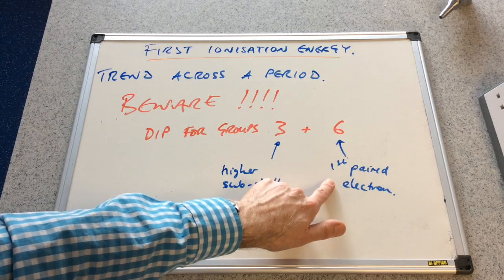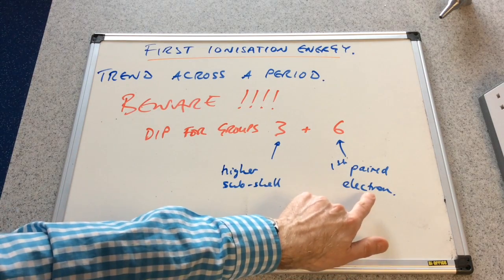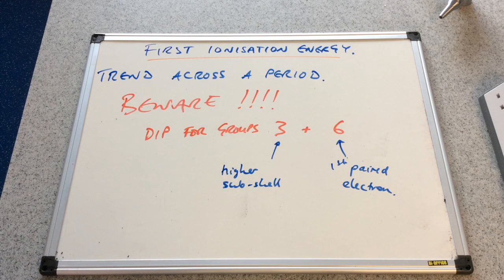And the group 6 reason was that it was the first paired electron, and that was the p4 configuration. So the paired electron experience that little bit of extra repulsion, and so it is slightly easier to remove.